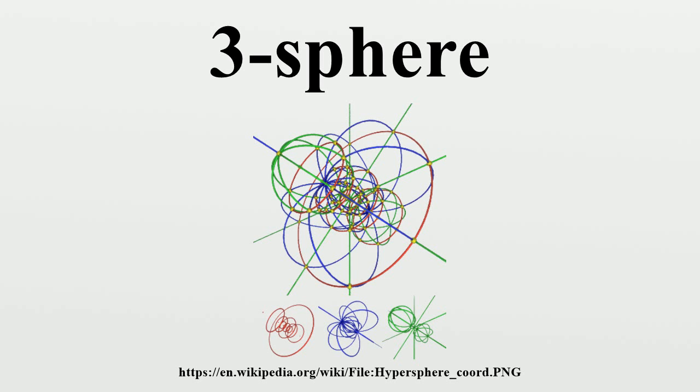Unlike the two-sphere, the three-sphere admits non-vanishing vector fields. One can even find three linearly independent and non-vanishing vector fields. These may be taken to be any left-invariant vector fields forming a basis for the Lie algebra of the three-sphere. This implies that the three-sphere is parallelizable. It follows that the tangent bundle of the three-sphere is trivial.